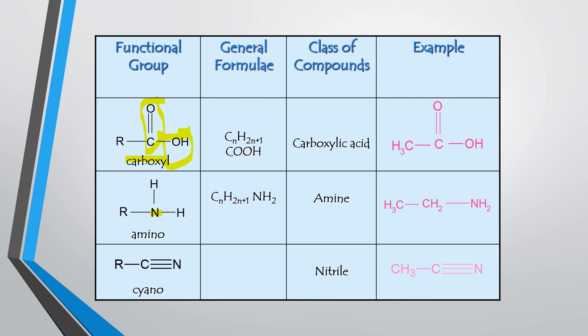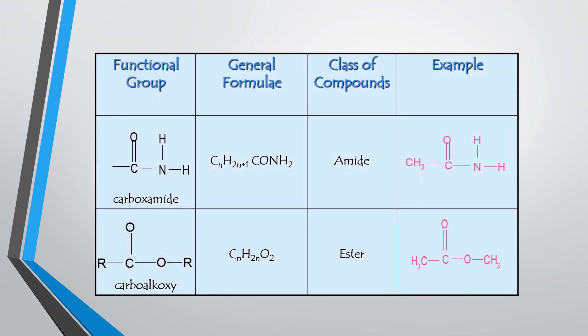The general formula for the amino group is CnH2n+1NH2, and the class of compound is called amine. The next functional group is carbosemide (amide). Carbosemide contains C double bond O (carbo) and an amine group. The combination of carbo and amino gives the name carbosemide. The general formula is CnH2n+1CONH2, and the class of compound it belongs to is amide.